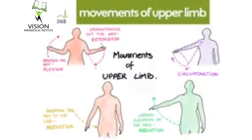Next is abduction: when the limb is taken away from the body, it is called abduction. Adduction is when the limb is brought close to the body — it is the opposite of abduction. Next is circumduction: it is a combination of extension, abduction, flexion, and adduction in sequence. An example of circumduction is bowling.